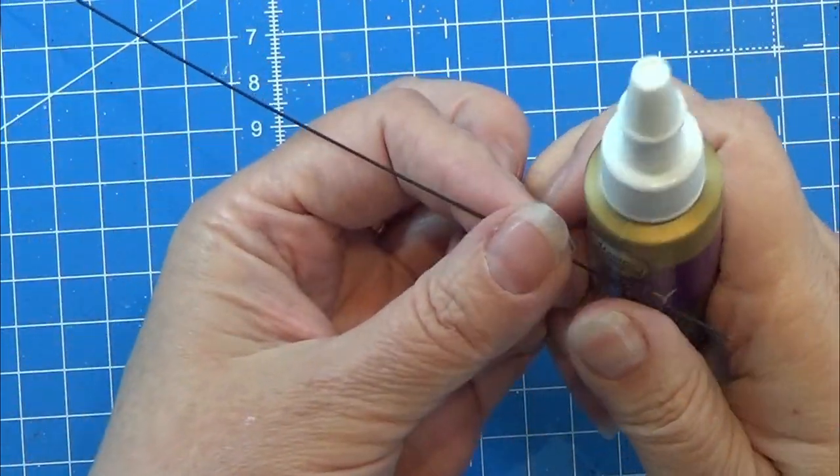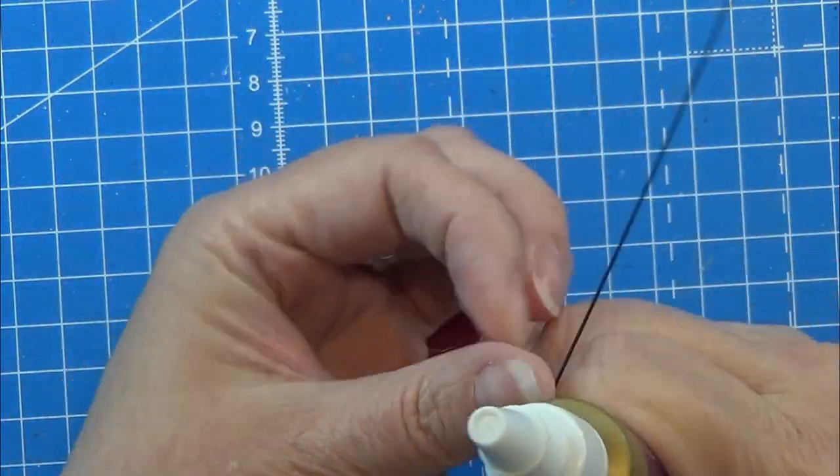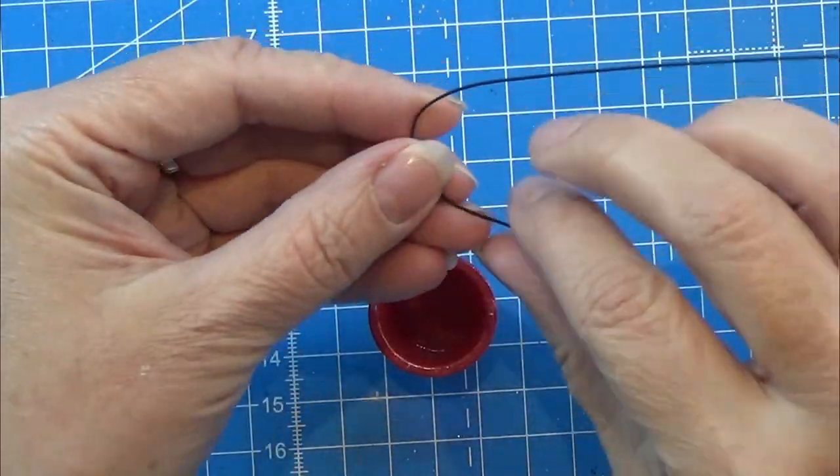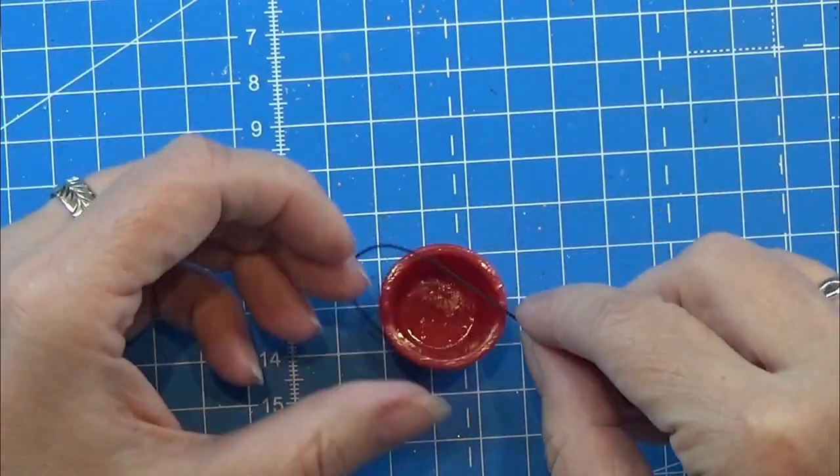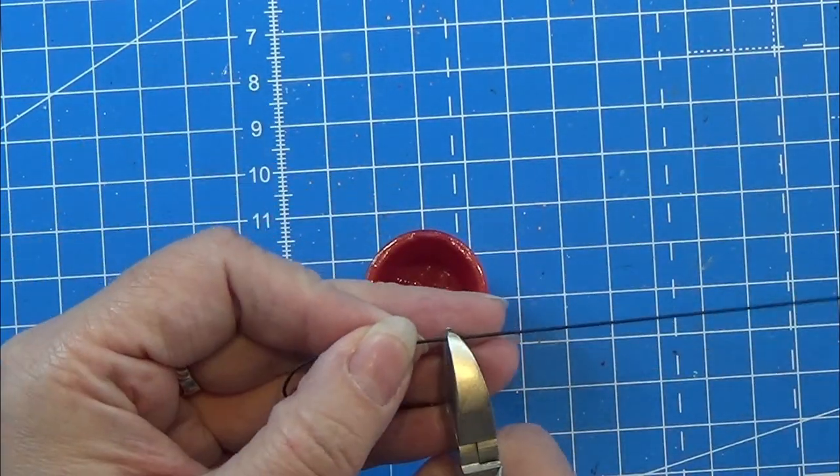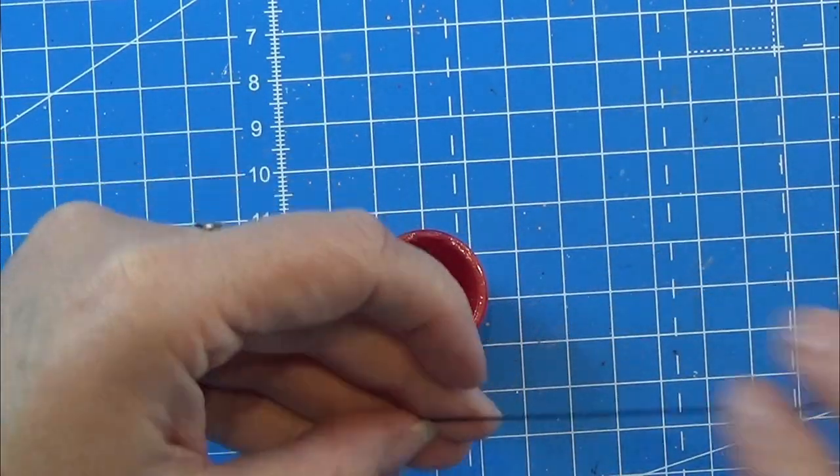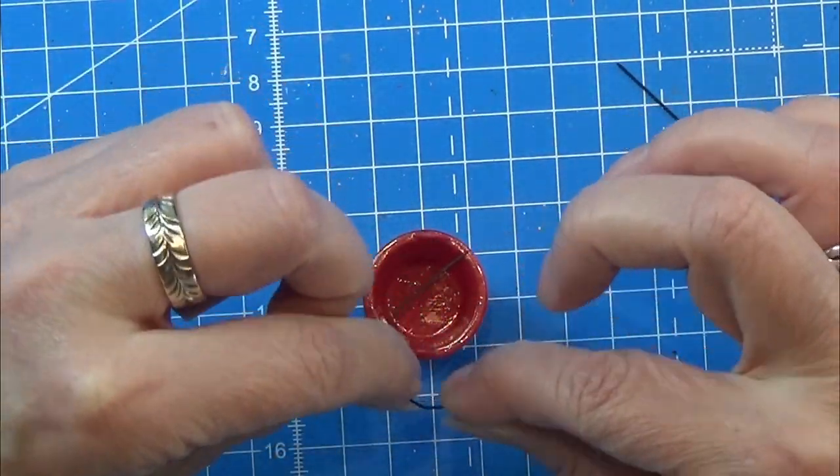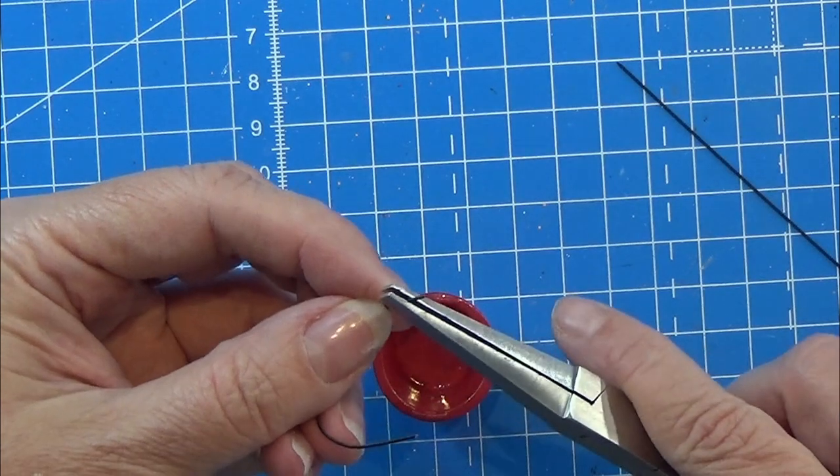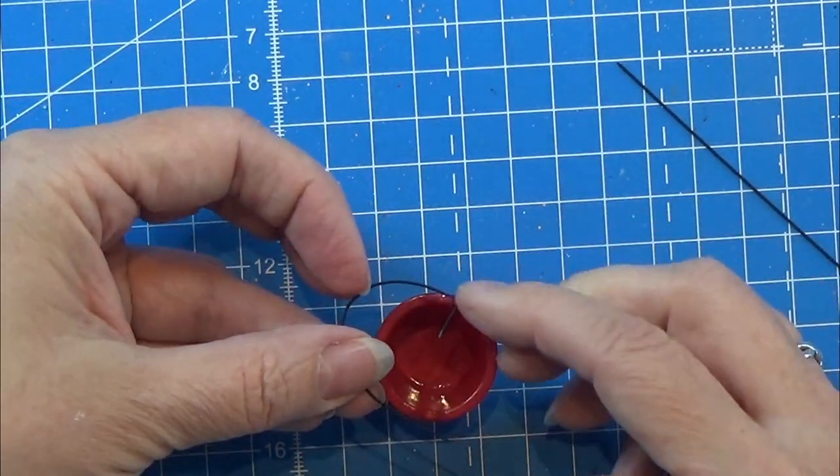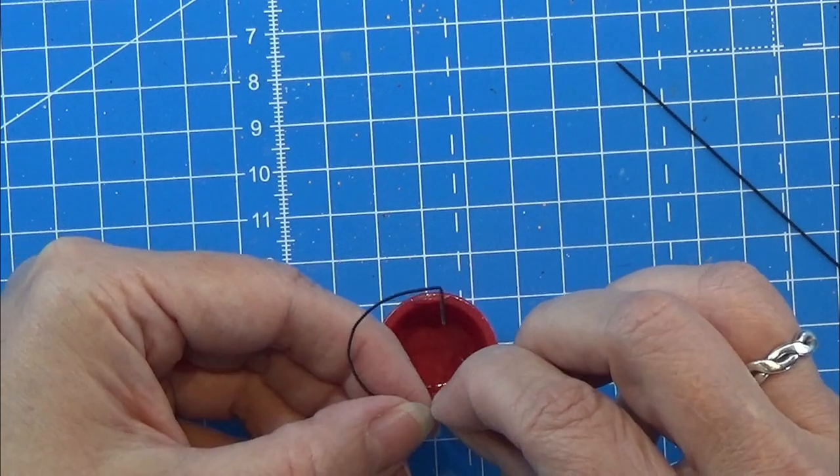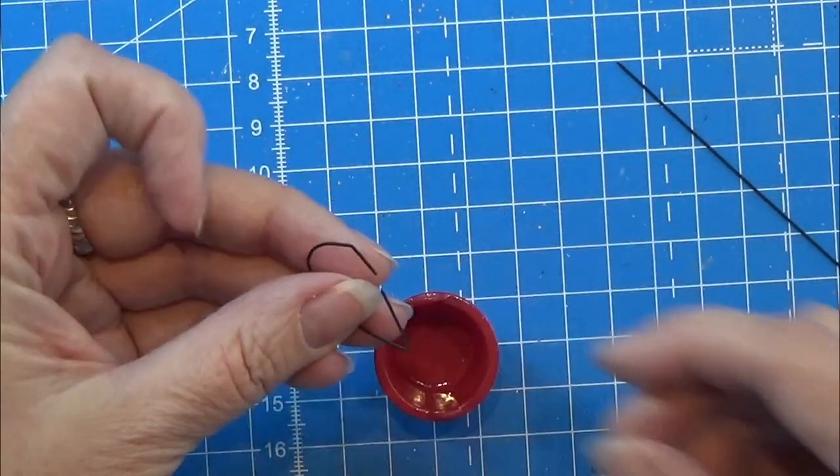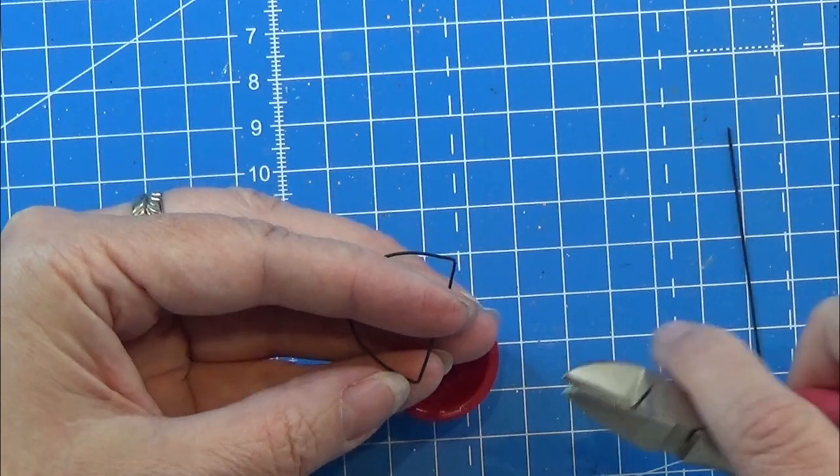Then I am going to take my tacky glue again because it has the perfect circumference for the handle of this little bucket. So I am shaping it into the roundness that I want this handle to have, and I am cutting it into the length that it needs to be. With a flat nose plier, I am just bending the ends of this little handle so that they can go through the small loops that are made on the bucket.